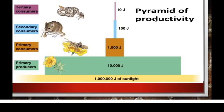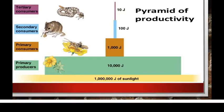The pyramid of productivity is calculated in terms of energy, and energy is measured in joules. Here: the primary producer is a plant, the primary consumer feeds on the plant, the secondary consumer feeds on the primary consumer, and the tertiary consumer feeds on the secondary consumer. For any ecosystem and any food chain, the pyramid of energy will always be upright. The amount of usable energy at each trophic level is only about 10% of the energy available at the previous trophic level, in accordance with the laws of thermodynamics.